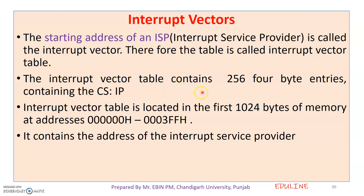In this Interrupt Vector Table there are 256 entries. The entries are available as CS and IP pairs. The Interrupt Vector Table is located in 1024 bytes of memory. The address starts at 00000000h.